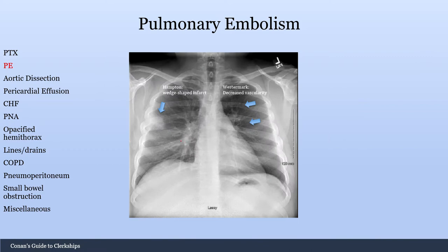Let's move on to pulmonary embolism. There are two pathognomonic findings you might be asked about. One is called Hampton's hump — a wedge-shaped infarct that occurs because the area has no perfusion and has infarcted, now visible as a density on the X-ray. The other finding is called the Westermark sign, which is decreased vascularity — there's a lot of vessels everywhere, and then there's this area that is relatively darker with fewer vessels.